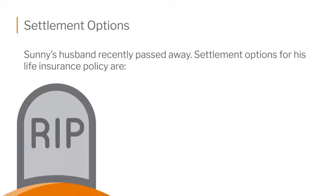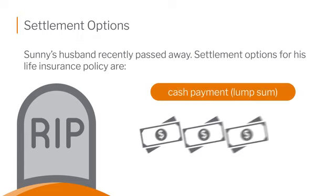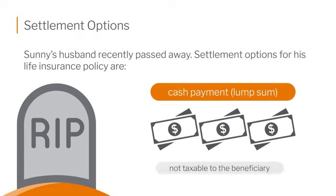The first choice is you take a lump sum cash payment — the total death benefit. Let's say it's $100,000. They would pay you that lump sum payment of $100,000. And remember, it's the death benefit from a life insurance policy, so you would receive that entire amount of money with no federal income tax of any kind. Tax-free — a lovely feature of life insurance.